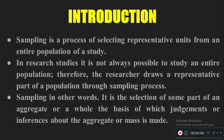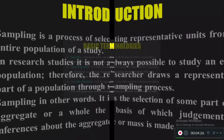Based on that sample, we make judgments or inferences, and the results can be generalized to the aggregate population. The statistical results obtained from the sample can be generalized to the population of our study. This is the basic concept of sampling.